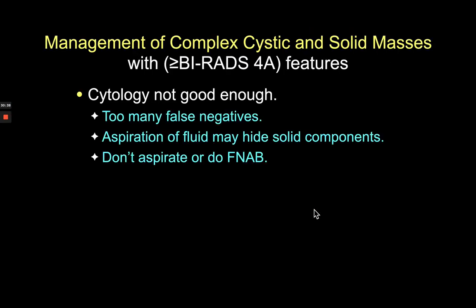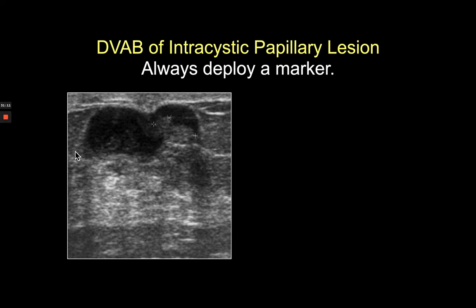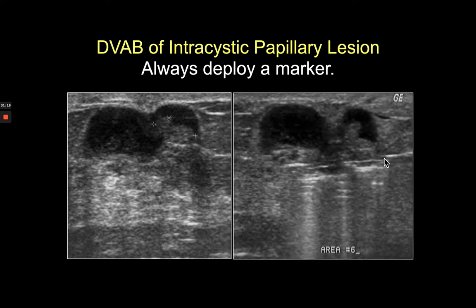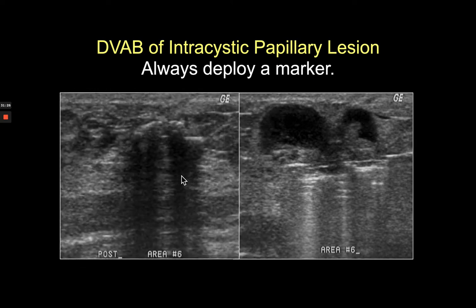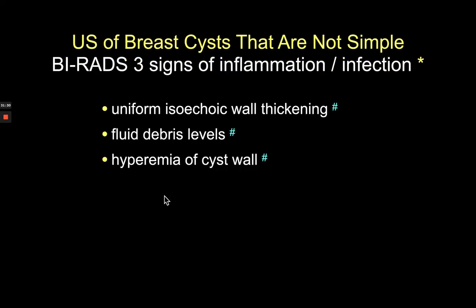Once we decide non-simple breast cysts are more likely a true papillary lesion than just apocrine metaplasia, cytology is not good enough. We can't just aspirate fluid because of too many false positives and false negatives. Atypical cells may be hard to locate once the lesion has been aspirated. Rather than aspiration, if I'm concerned about a papillary lesion, I go straight to ultrasound-guided vacuum-assisted biopsy — using the vacuum probe to remove everything up to the front wall of the cyst, always deploying a marker.